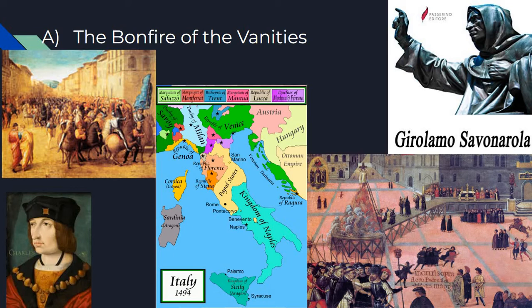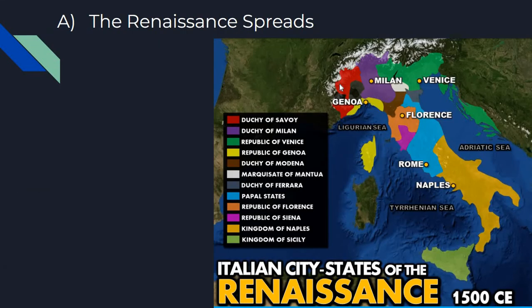But fortunately for the rest of Italy, all of these ideas and people spread out to a bunch of the other Italian city-states, and the Renaissance continued. Now that Florence was no longer the single home of the Renaissance, we started to see all of these other cities take their place as important centers of learning, art, and Renaissance culture.